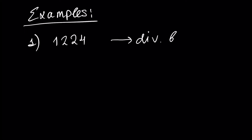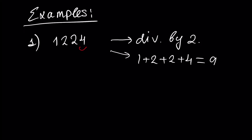It's divisible by 2 obviously, because number 4 is even, that's why this number is divisible by 2. Next, since 1 plus 2 plus 2 plus 4 is equal to 9, and 9 is divisible by 3, using the previous result our number is divisible by 3. That's why, since this number is divisible by 2 and 3, the answer is yes — our number is divisible by 6.